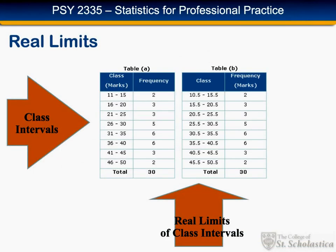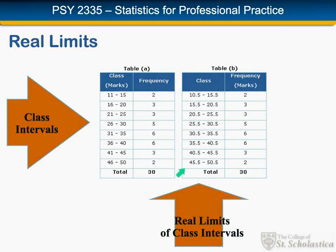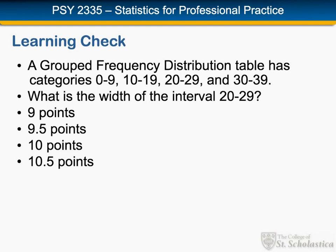This slide shows the way a table is usually presented with class marks naming the intervals, then filling in what the actual real intervals would be on the assumption that we're dealing with continuous data. Here's another learning check: if we had a grouped frequency distribution with intervals 0 to 9, 10 to 19, what's the width of the interval 20 to 29? If doing it just by subtraction people would pick nine points, but the correct answer is 10 points because of real limits.